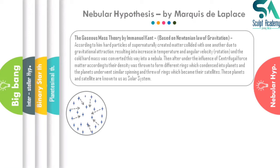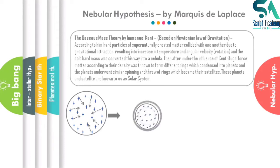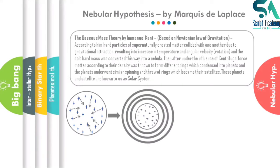As a result of gravitational attraction and collision, there was an increase in temperature and angular velocity of this cold hard mass, which was directly and indirectly converted into a nebula — a giant cloud of dust and gas with high temperature and angular velocity, that is, rotation. Under the influence of centrifugal force, the nebula started rotating.